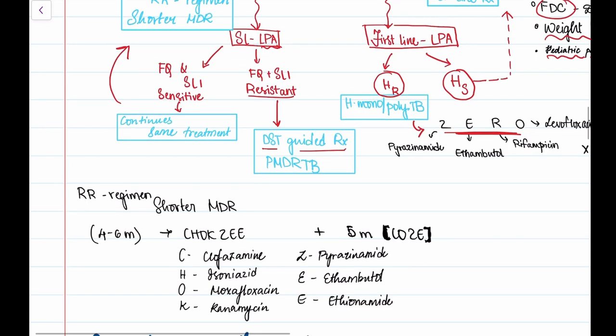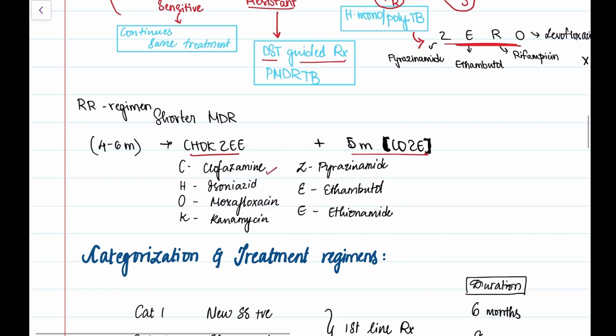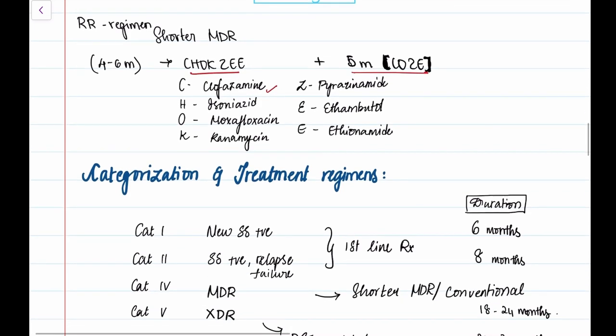The shorter course MDR treatment can be remembered by mnemonics Chogzy and Cozy. Chogzy is clofazimine, isoniazid, moxifloxacin, kanamycin, pyrazinamide, ethambutol, and ethionamide. I hope you're following me.